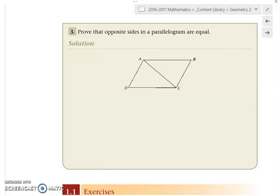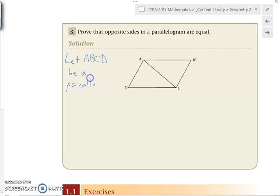Okay, we're proving that opposite sides in parallelograms are equal. So we can't assume they are just because it is true. So we have to prove that they're equal. So we're going to just draw a parallelogram and we're going to say, let ABCD be a parallelogram.